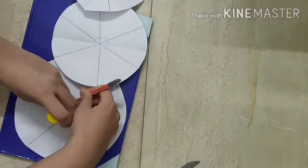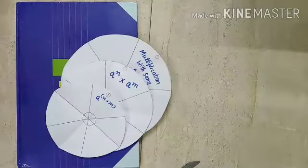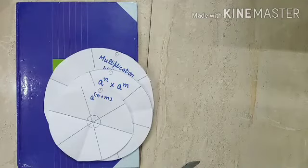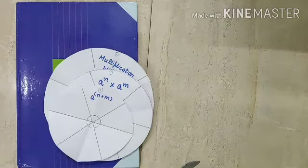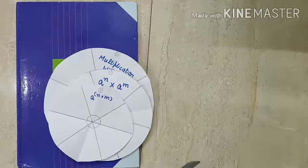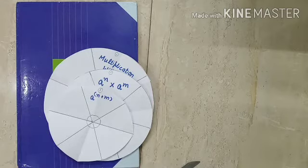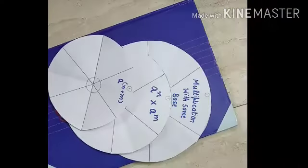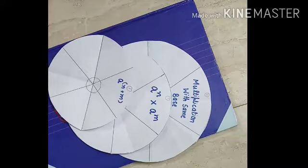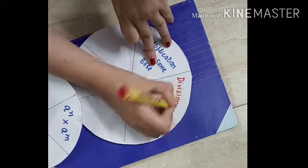Now I have to highlight the center, so I'm putting a bigger circle. Now what I've done: I have started writing the rules. The first rule is multiplication with the same base, so I've written a raised to power n into a raised to power m will give me a raised to power n plus m. So just writing the first rule as a name and then doing it.